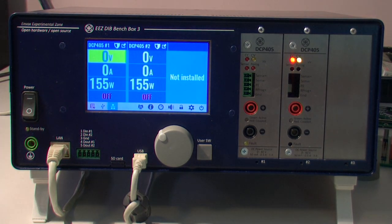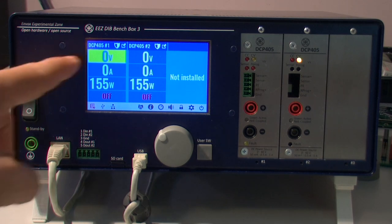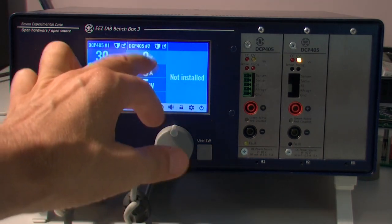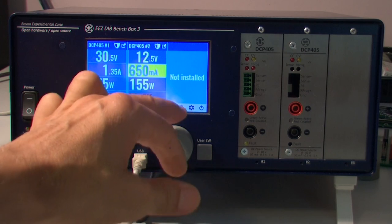Startup time is fast and we are in the default view in which we can see the basic info about each installed modules. So, voltage, amperage, watts and we can start immediately to set some numbers.